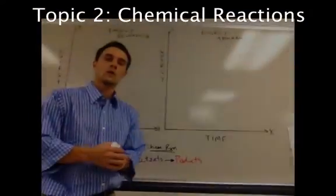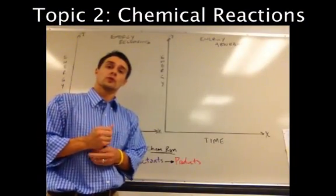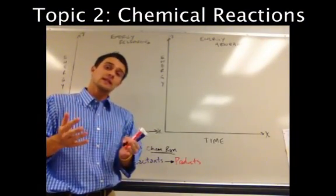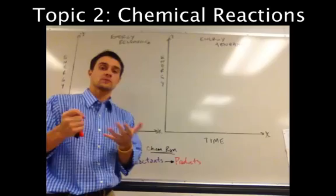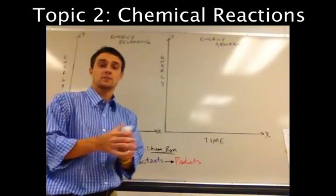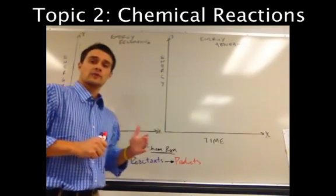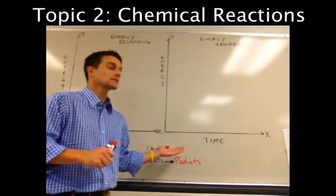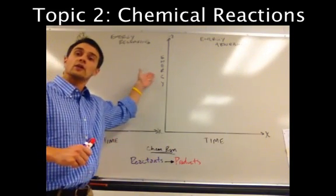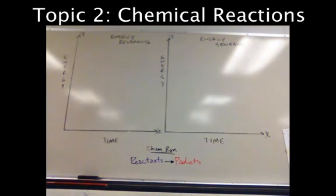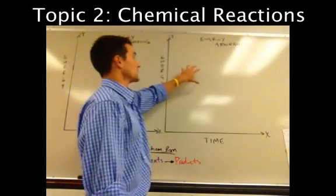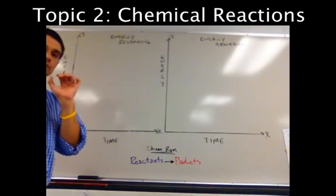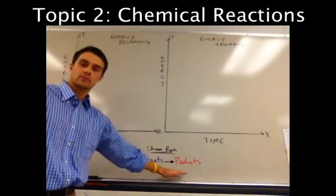Let's head to the board and check out energy-releasing and energy-absorbing chemical reactions. On our graph, time is on the x-axis and energy is on the y-axis. The left graph is energy-releasing and the right is energy-absorbing. Chemical reactions go from reactants to products.